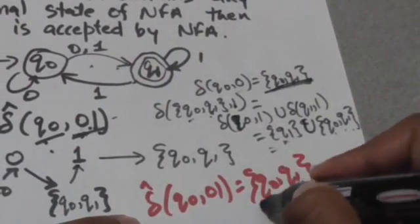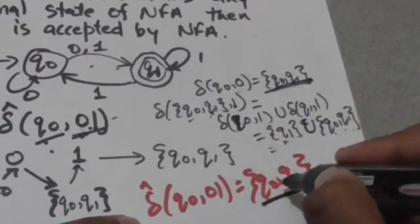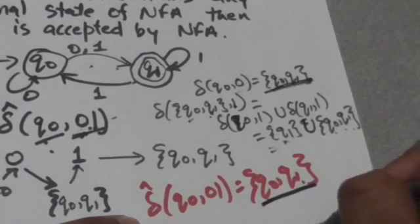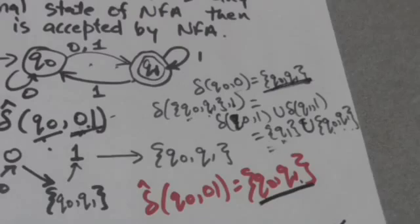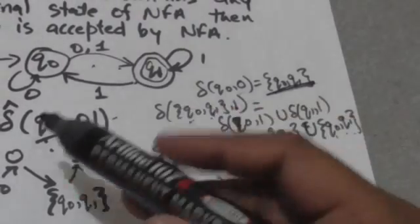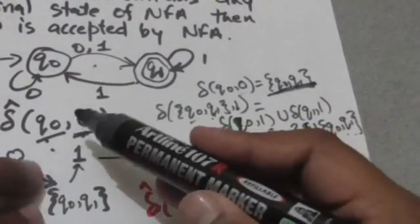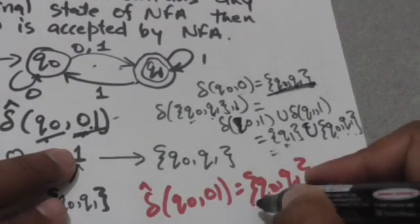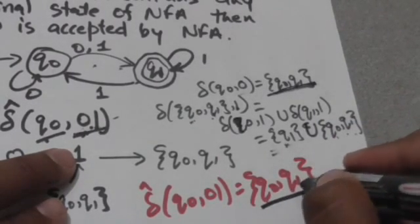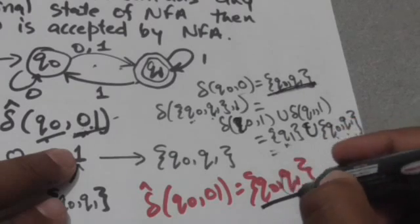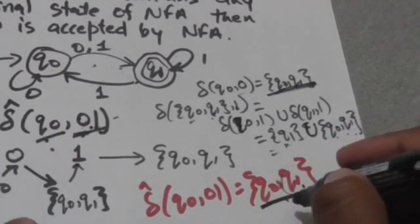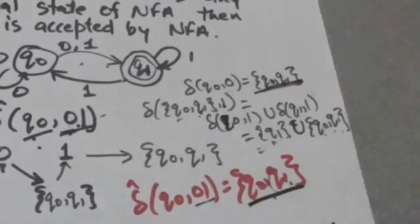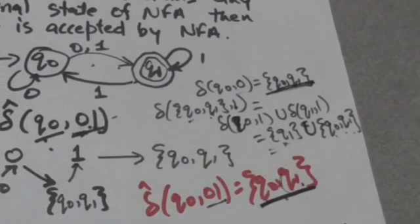The output of this extended transition function is the set {q0, q1}, where q1 is the final state of the NFA. Therefore, the string 0 1 is accepted by this NFA.